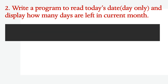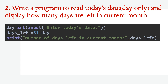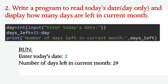Write a program to read today's date and display how many days are left in the current month. There is a variable day which will take the date. Since it is a numeric value, we have converted it into integer using the int function. Within input you pass 'enter today's date' — only the date. Now days_left is equal to 31 minus day if it is a 31-day month, or else 30 minus day. It will print 'number of days left in current month is days_left'. Suppose you enter 2 — it will print 29.